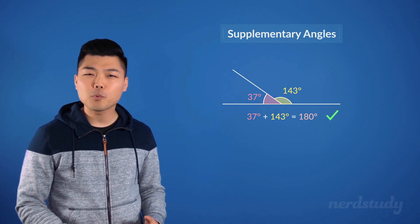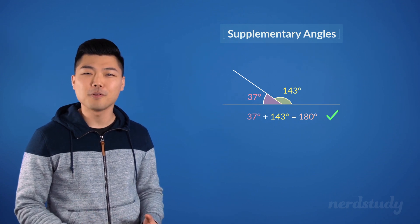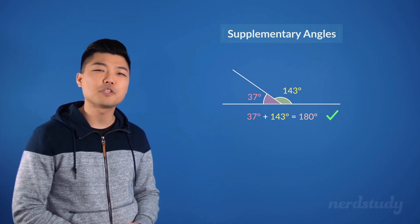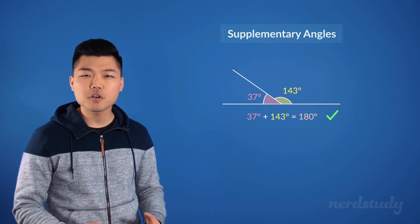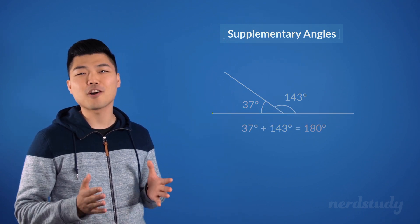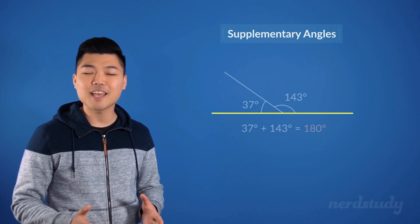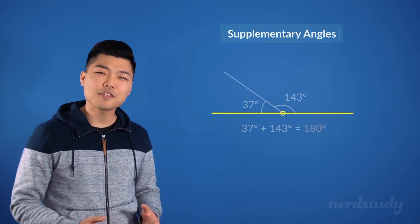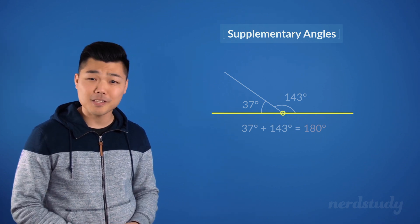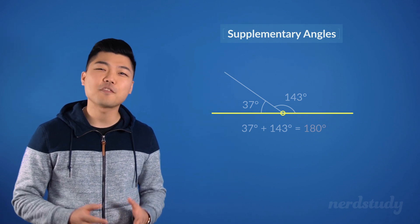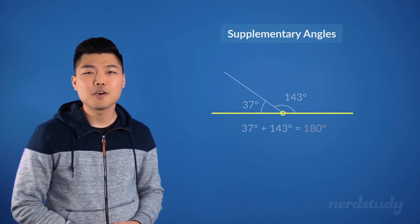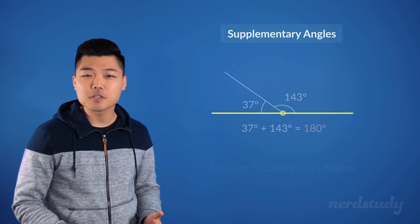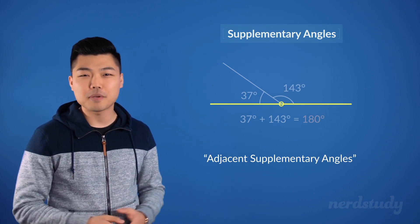But wait a minute, we can categorize this example one more time from what we just learned. We just learned that if two angles share a common side and a common vertex, then they're considered adjacent. And in this example, we have just that. So, we can actually call these angles adjacent supplementary angles.